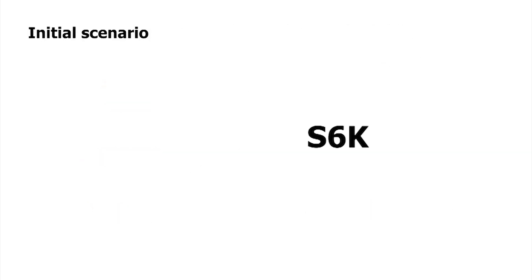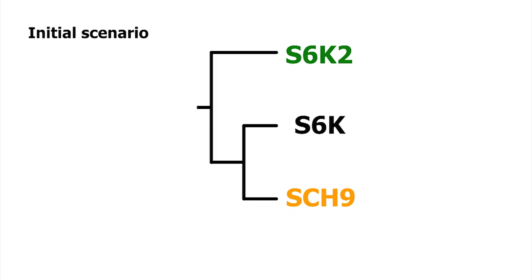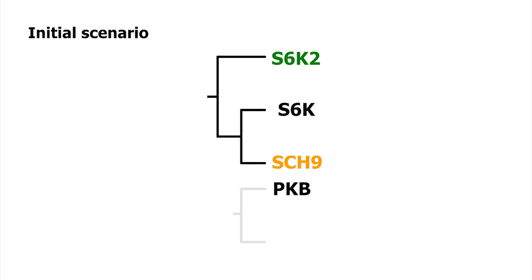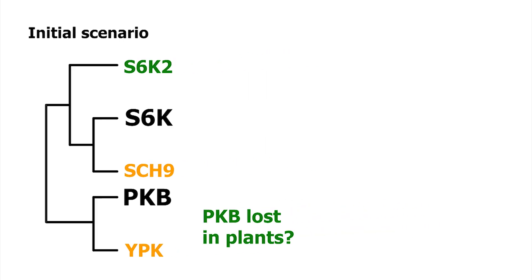For S6K, we have an animal, a yeast, and a plant ortholog which appear to be directly related. And for PKB, we have YPK. S6K and PKB are more distantly related to one another. This scenario suggests that PKB is lost in plants.